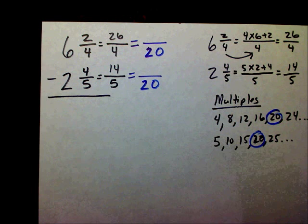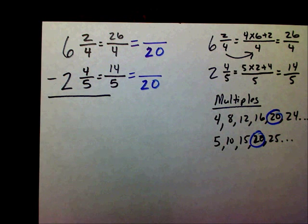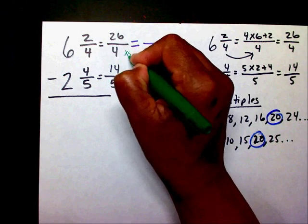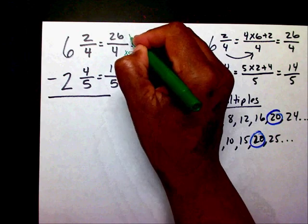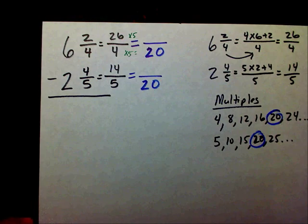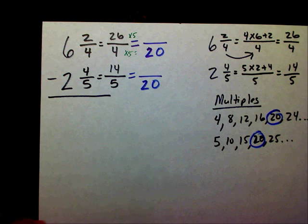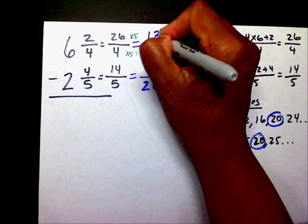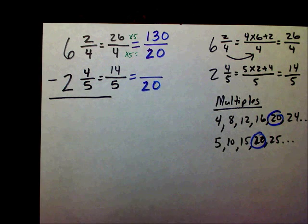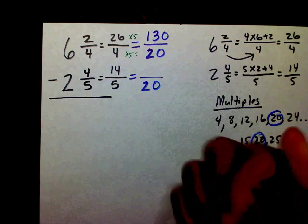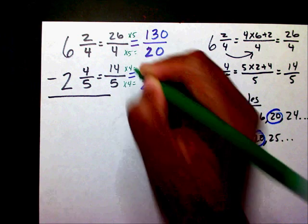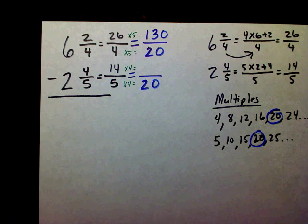Now I need to find my new numerators. I'm going to multiply 4 times 5 — that's 20. So 26 times 5 is 130. Then 5 times 4 gives me 20, and 14 times 4 gives me 56.